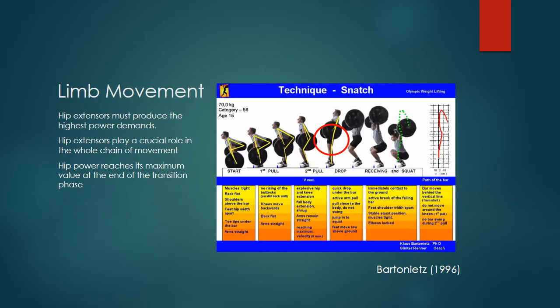In the snatch, the hip extensors must produce the highest power demands. The hip extensors play a huge role in the whole chain of movement. If the hips do not supply sufficient power, the knee extensors tend to do too much work. Hip power reaches its maximum value at the end of the transition phase.